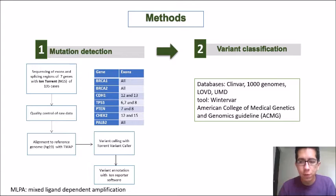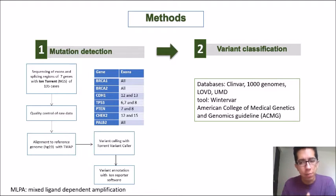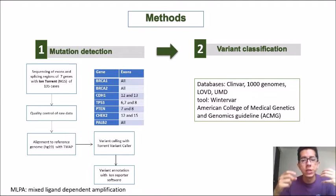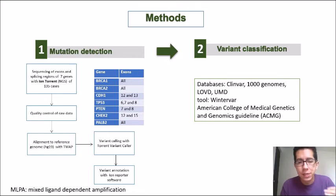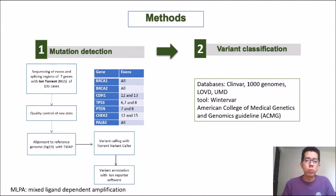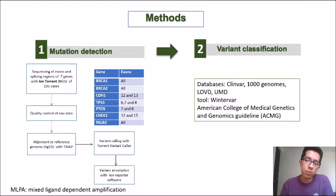We extracted DNA from white blood cells to obtain germline DNA, then performed an amplicon approach targeting exons and intron boundaries. We prepared libraries and sequenced the exons and splicing regions of the seven genes using the Ion Torrent platform. We had 135 cases. After quality control of the raw data, we aligned the reads to a reference genome using TMAP, then performed variant calling with the Torrent Variant Caller. We also performed multiplex ligation-dependent probe amplification for large genomic rearrangements in the BRCA1 gene.